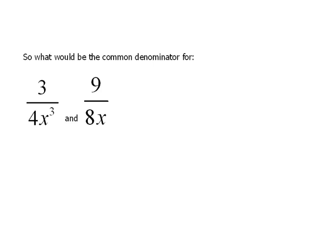Alright, so what we know about numbers, let's now apply to numbers and letters — true rational expressions. Here we have 3 over 4x cubed and 9 over 8x, and we're going to try and find the least common denominator.